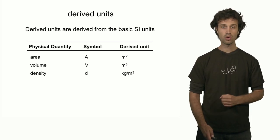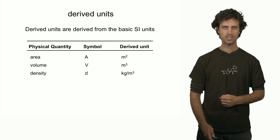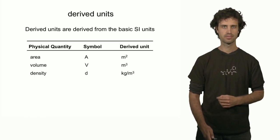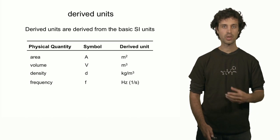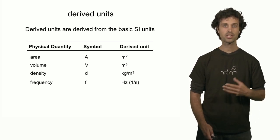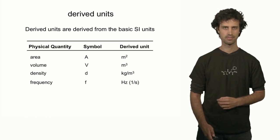Density is also a derived unit, indicated by the letter D. The unit of density is kilogram over meter cubed. And finally, frequency — a quantity related to the quantity of time. The unit is Hertz, which is defined as 1 over second.